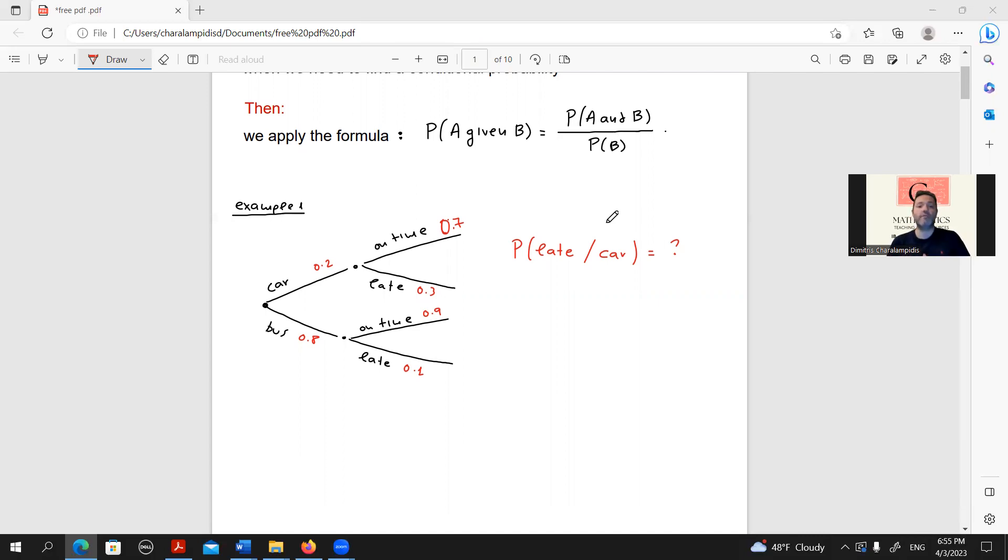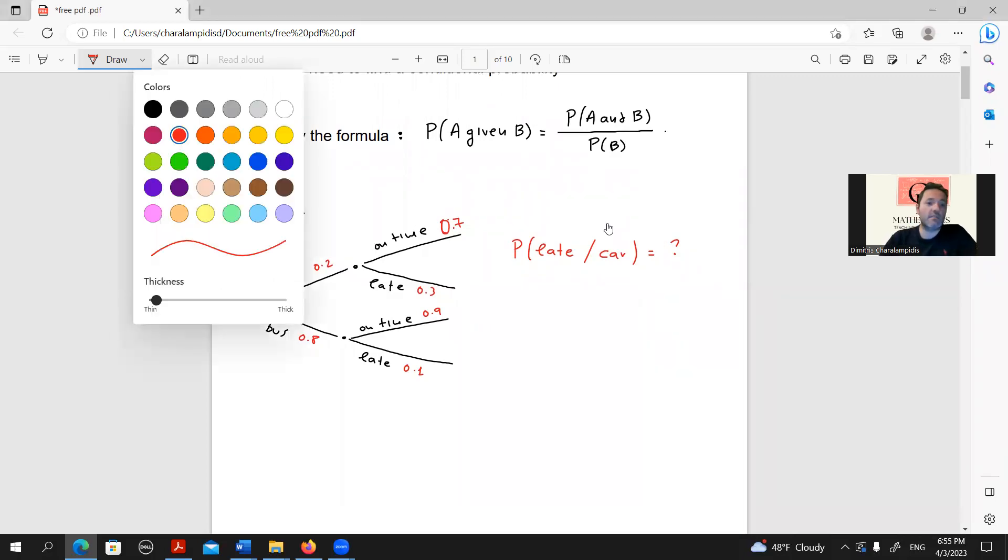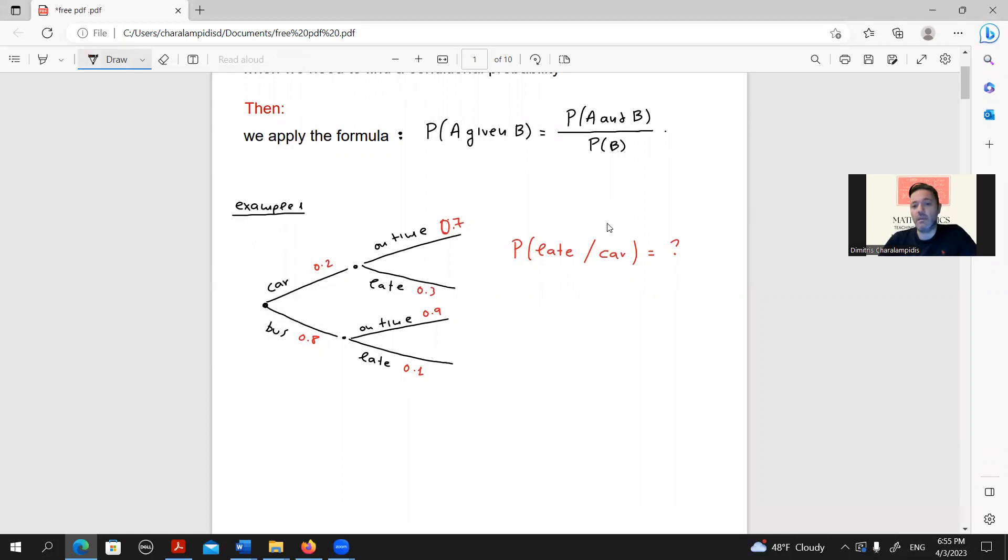Now, we want to find the probability of being late given car. This slash notation means the given. Based on the formula we just mentioned in the beginning, this should be equal to probability of late and car over the probability of car.